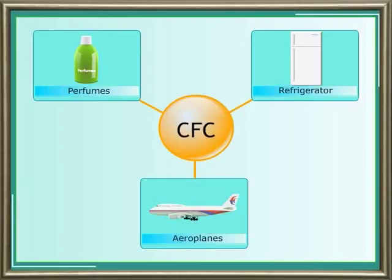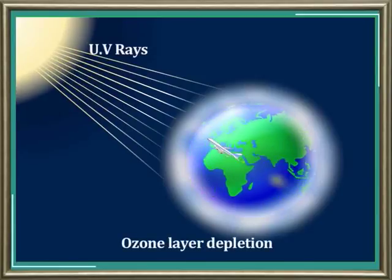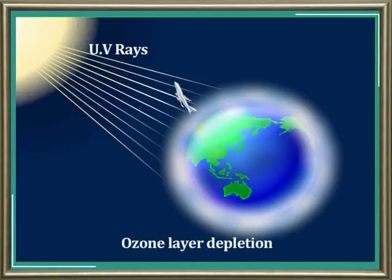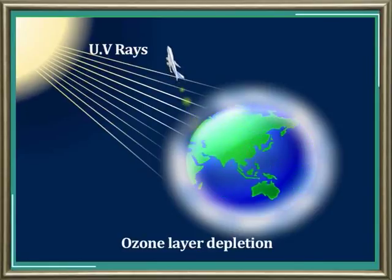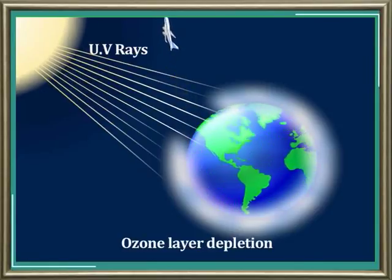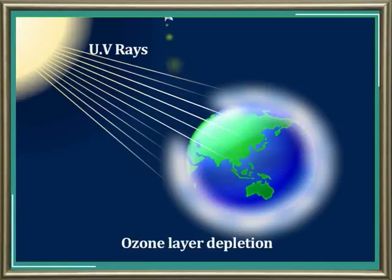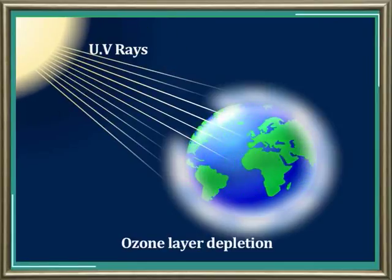Compounds like chlorofluorocarbons released by perfumes, refrigerators, and aeroplanes deplete the ozone layer by converting ozone to oxygen. Depletion of this layer results in UV radiation reaching the earth and destroying living organisms.